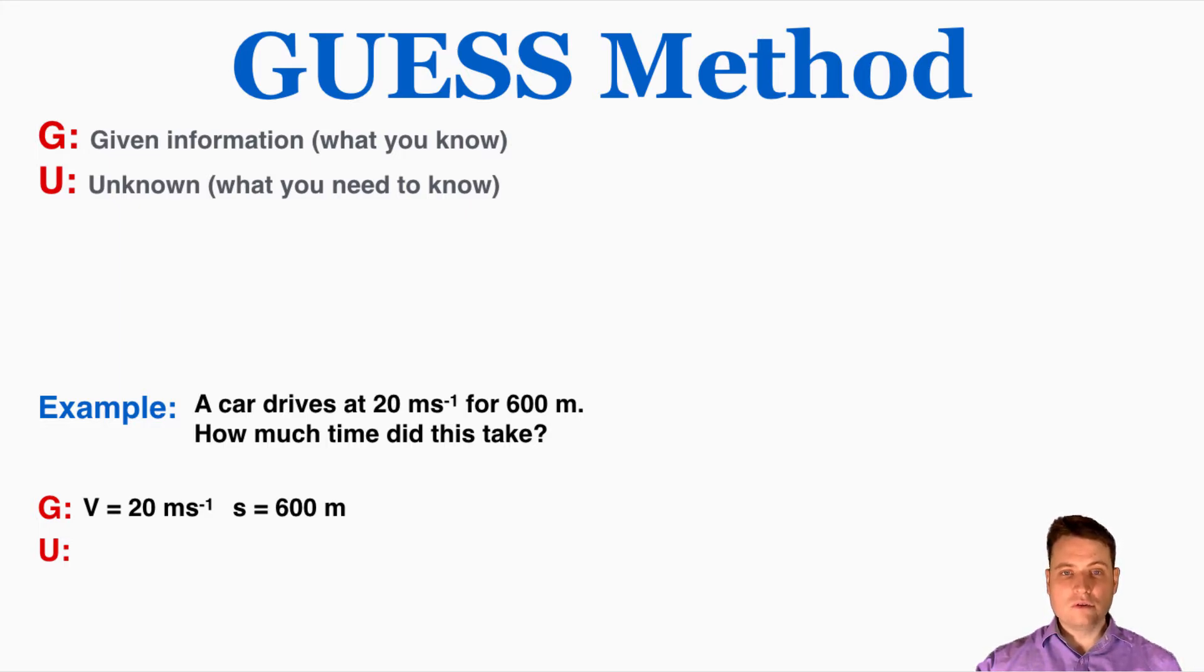The next step is unknown, which is what you need to know. So this is where you write the variable that you're trying to find, so in this case I'm trying to find the time t, so I'm going to write t equals question mark, that's the thing that I'm looking for in this problem.